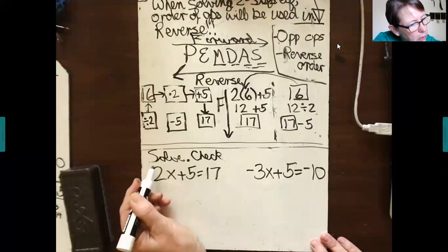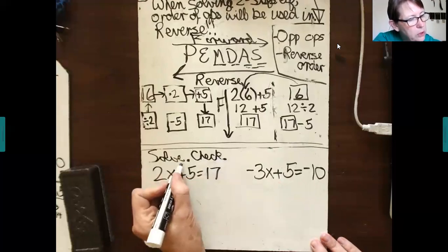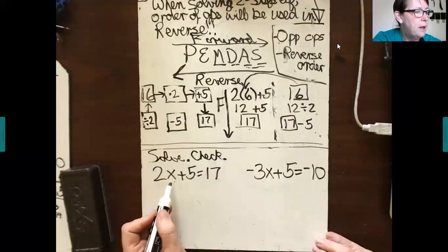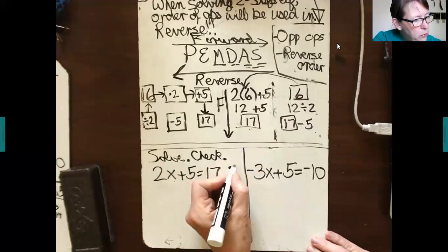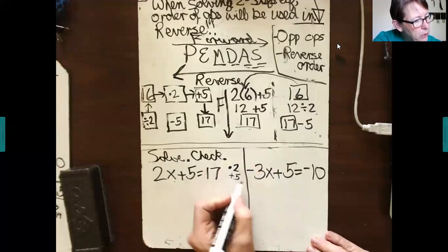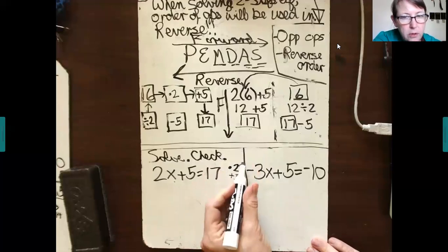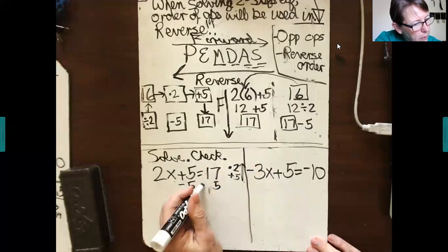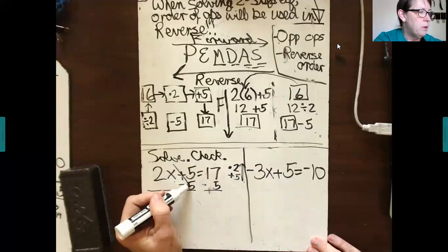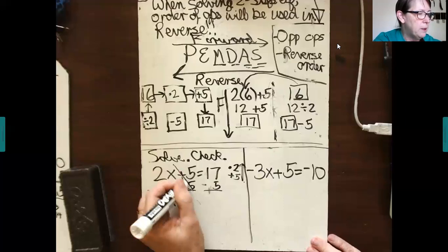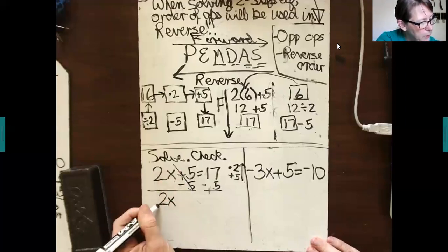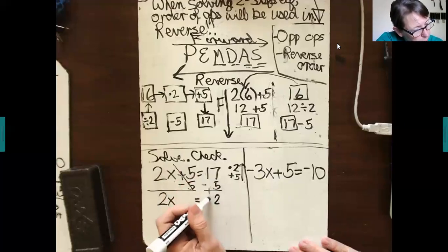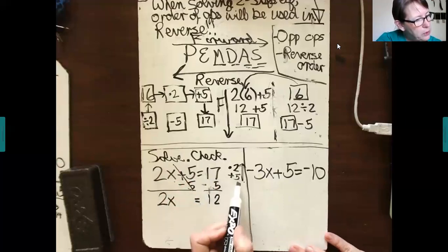The directions are very simply put. Solve. Check. Solve the equation. Check your answers. Ask yourself what's being done to the variable, in this case x. What's being done to x? It's being multiplied by 2 and then added by 5. So we're going to do the opposite operation in reverse order. So instead of adding by 5, I'm going to subtract each side by 5. These cancel out to zero or add up to zero, combine to add up to zero. So I write, then I write 2x.